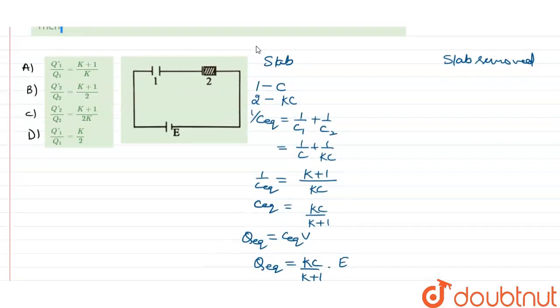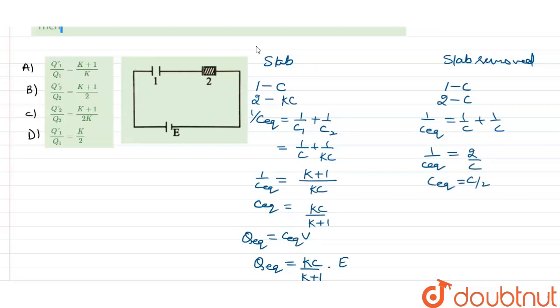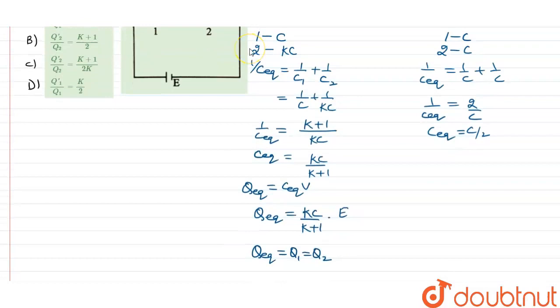Similarly, we can do the case for slab is removed. C1 is C. The slab is removed, so 1/C_eq equals 1/C plus 1/C, and that equals 2/C. So C_eq equals C/2.